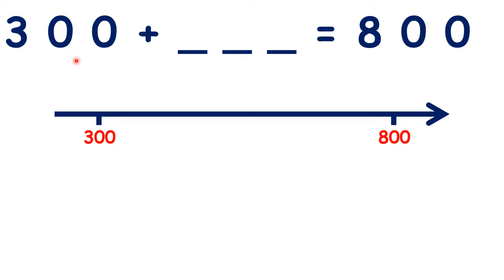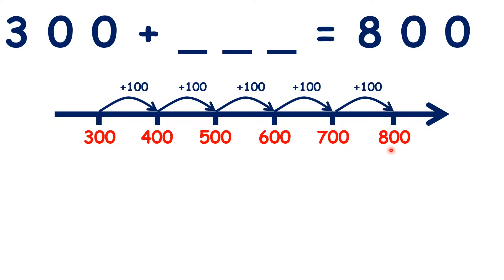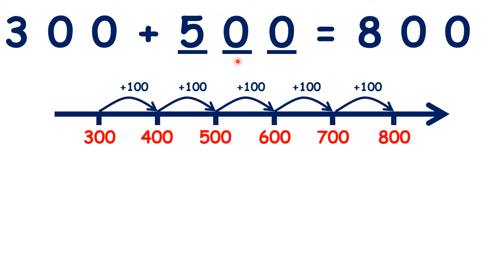We have 300 plus something equals 800, and we need to find the missing number. On our number line, we can write 300 and 800 and find the difference. Adding 100 gives us 400, then another 100 gives us 500, then 600, 700, and now we've reached our total 800. So we added 100 five times, and five lots of 100 is 500, so that's our missing number.